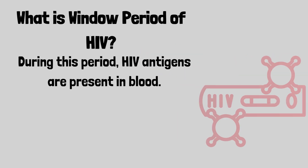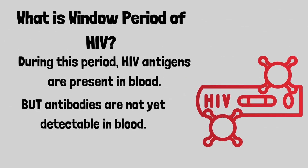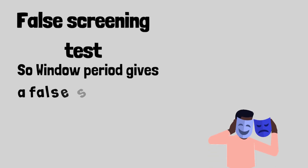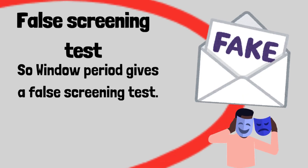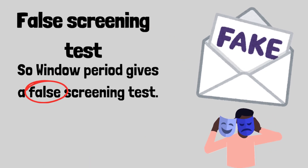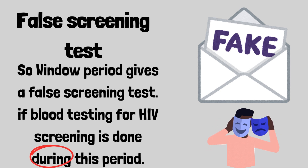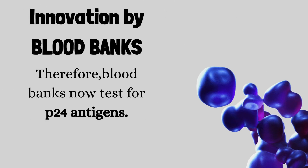But HIV antibodies are not yet detectable in the blood. So this period gives a false screening test if blood testing for HIV screening is done during this period. Due to this, a new innovation was done — blood banks now test for p24 antigens.